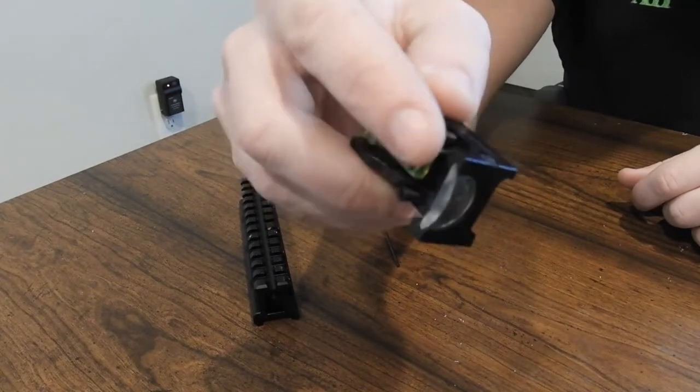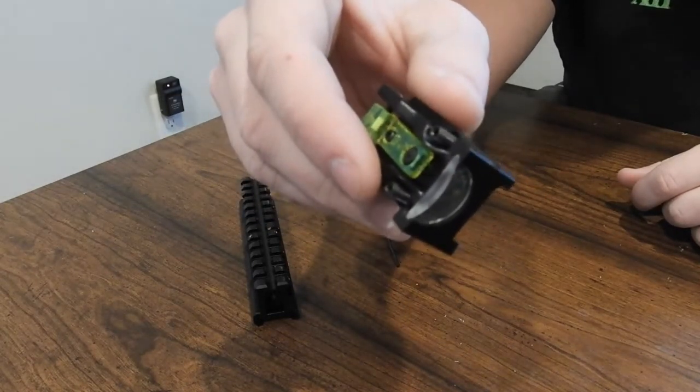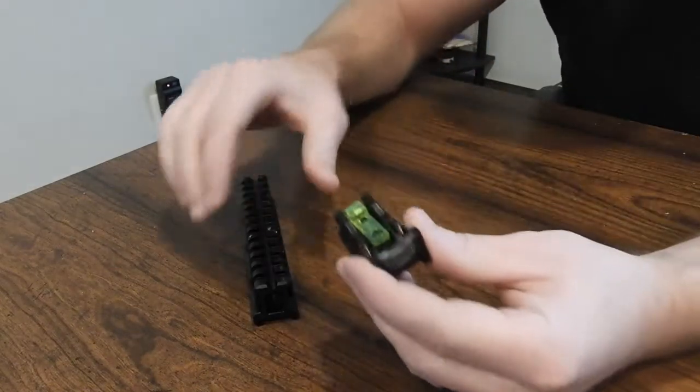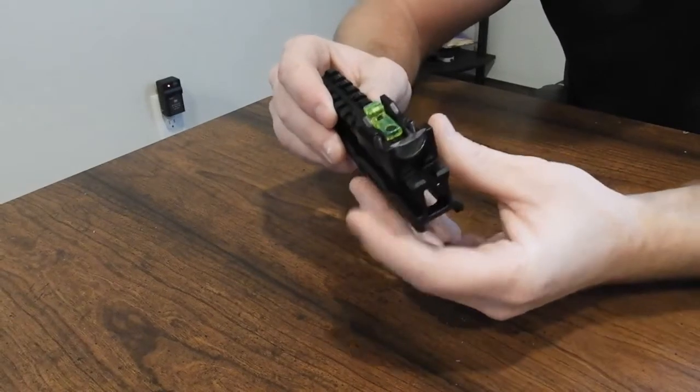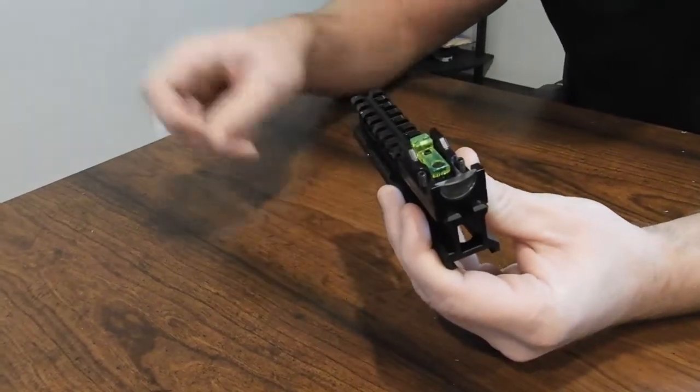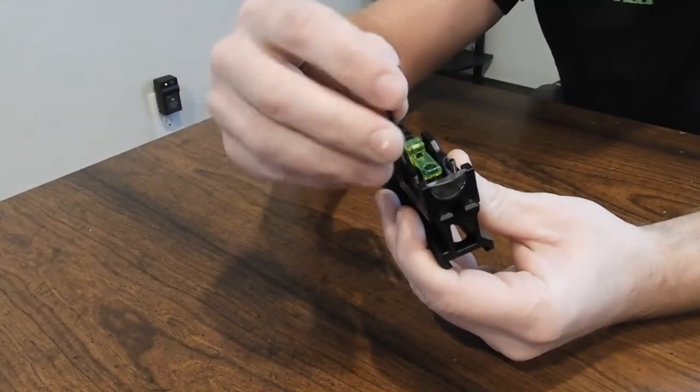It has a mounting screw here and here on either side. You'll simply slide the sight on from the end of the rail, put it where you want, and use the Allen key to set these screws.